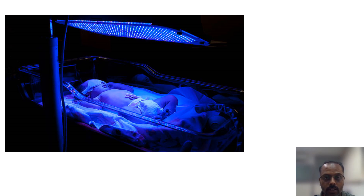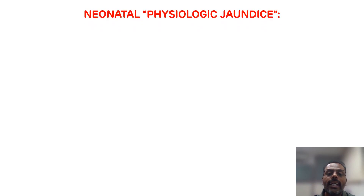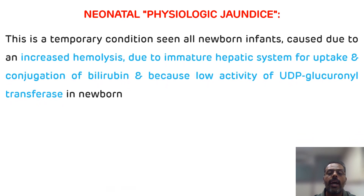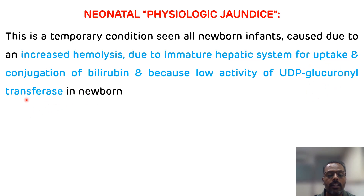Neonatal or physiological jaundice occurs in almost all newborn infants in the first two weeks of life. It occurs due to the excessive destruction of RBCs or erythrocytes, an immature hepatic system for the uptake and conjugation of bilirubin, and reduced activity of UDP glucuronyl transferase enzyme in the newborn. This condition becomes normal within two weeks of life and does not require any treatment.